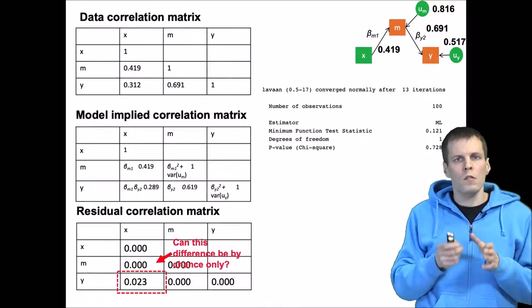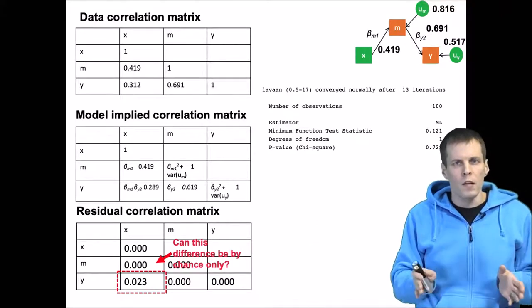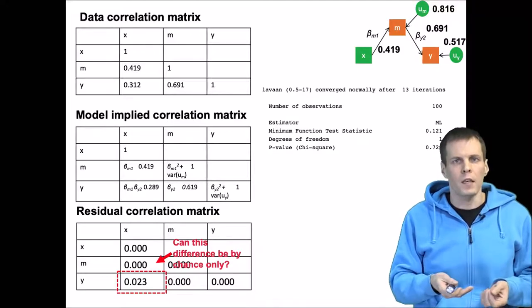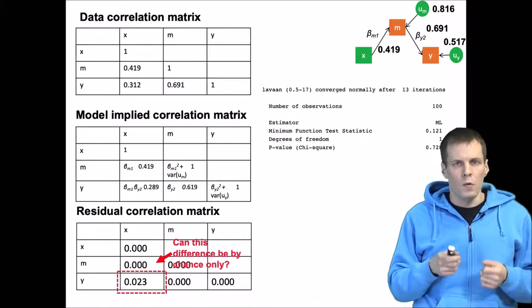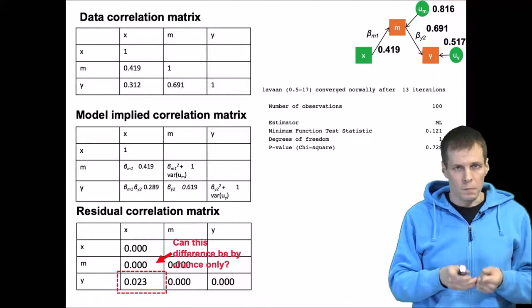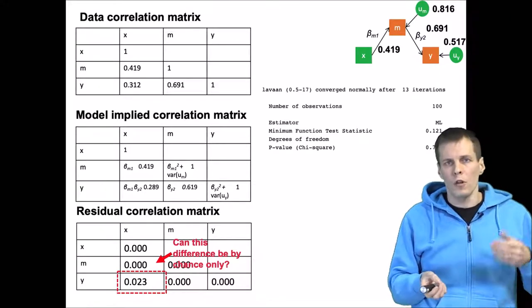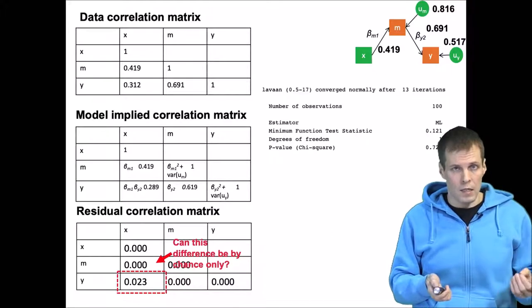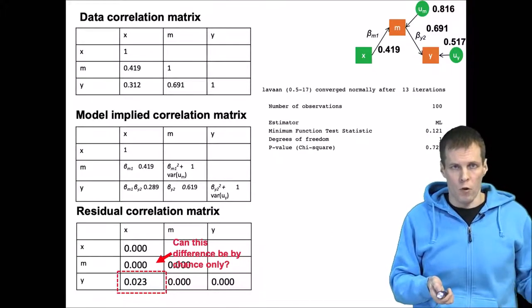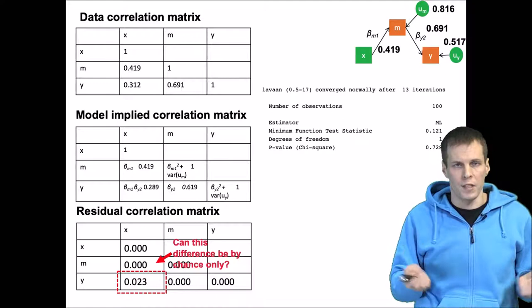Models in small samples rarely reproduce the data covariance matrix perfectly, and we want to understand whether the degree of misfit can be attributed to sampling error or should it be interpreted as evidence of the model being incorrect for the data and we should reject the model.